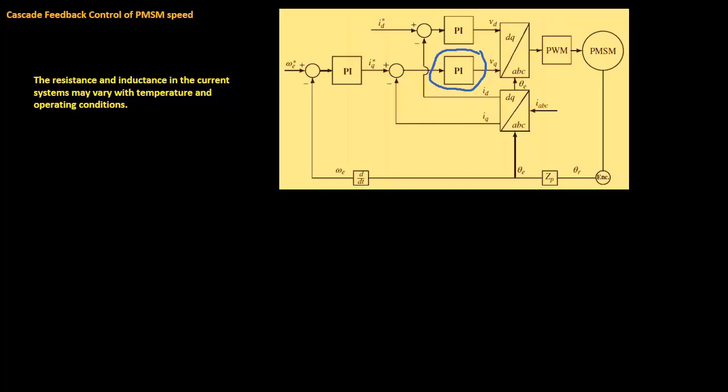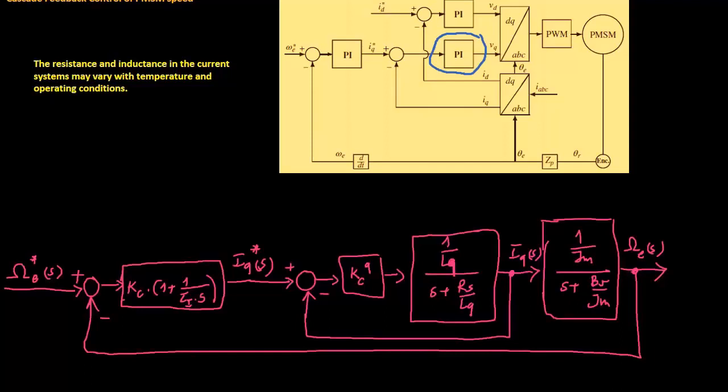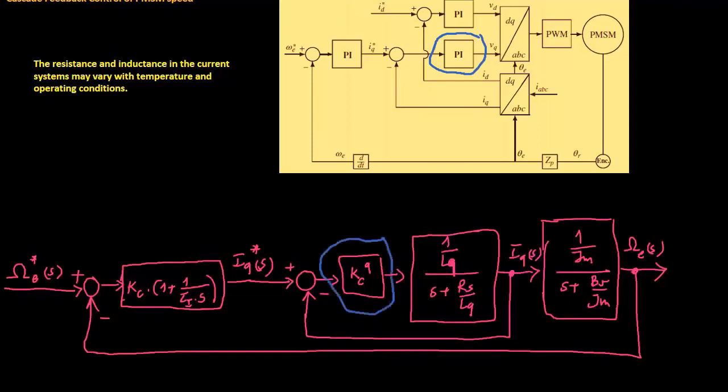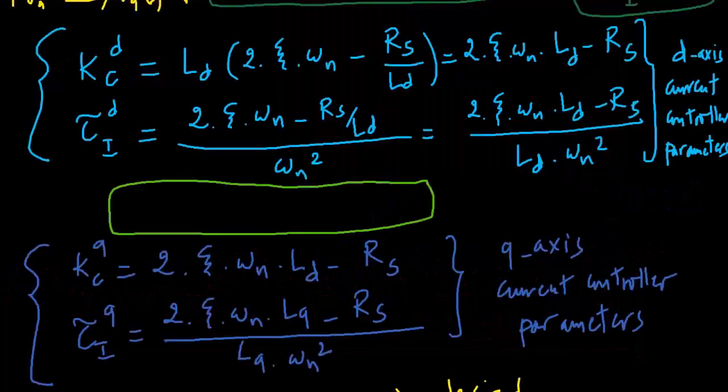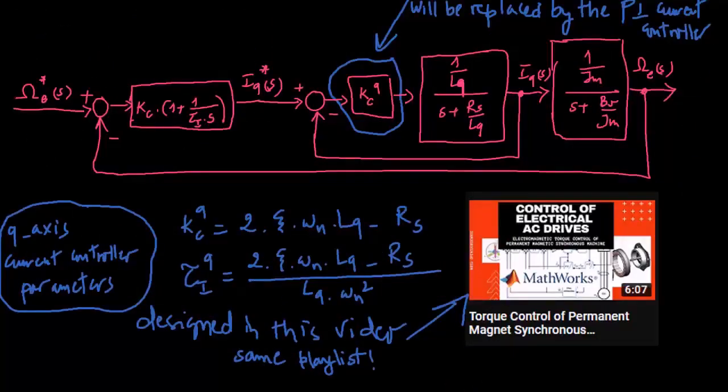A typical cascade control using a dual PI configuration will resemble the diagram we've previously shown. The primary difference is that the internal loop current controller, represented by KQC, is swapped out for the PI current controller, which was covered in our penultimate video.